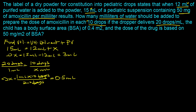Now that we have 0.5 milliliters, we need to find how much drug is present in those 10 drops. We'll use the patient's BSA of 0.4 meters squared and the normalized dose of 50 milligrams per meter squared. So: 50 mg/m² × 0.4 m² — the meters squared cancel out — giving 20 milligrams.